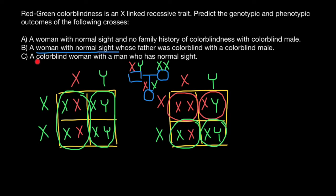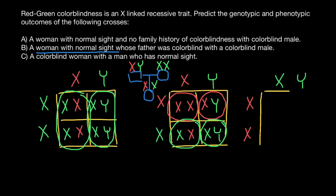The last question: a colorblind woman with a man who has normal sight. Because the man has normal sight, his genotype is a normal X and a normal Y chromosome. The female has two defective X chromosomes — if she were a carrier with only one defective X chromosome she would have normal vision, but we know she is colorblind. Let's build a simple Punnett square.